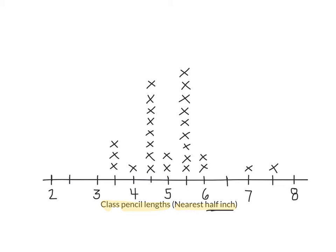Now we've made a new line plot. What is the range of pencil lengths this time? What's the shortest pencil that we have? Three and a half inches. What is the longest pencil being used in our class right now? Seven and a half. So what's the difference between the greatest amount, seven and a half, and the shortest amount, three and a half? What's seven and a half minus three and a half? Four inches. So the difference between the greatest length and the smallest length is four inches. What pencil length is the most common in this class right now? Five and a half inches.